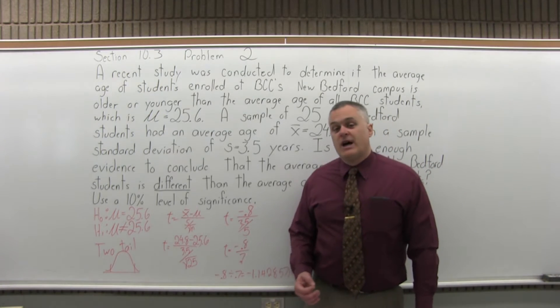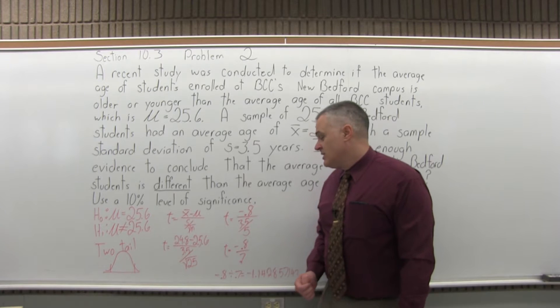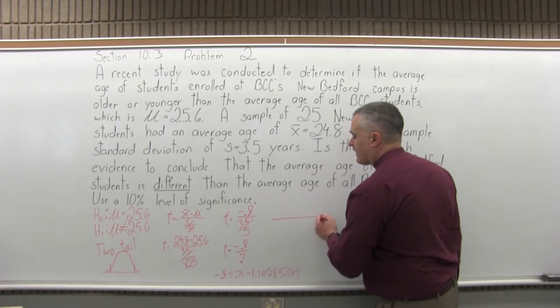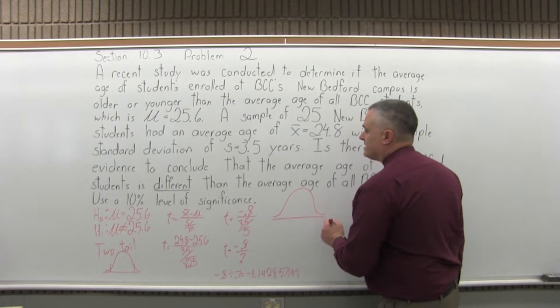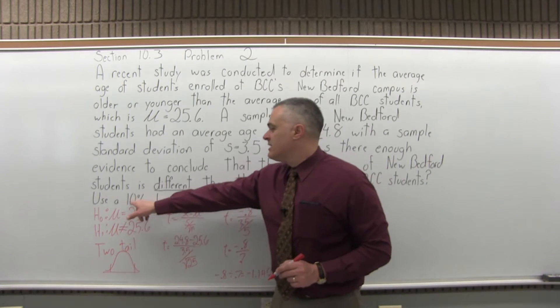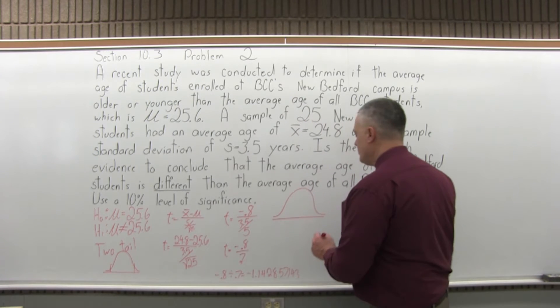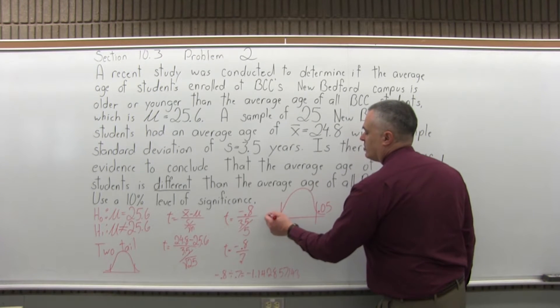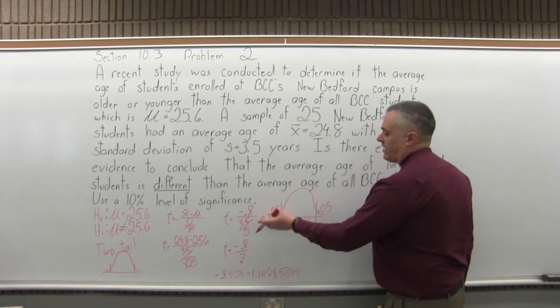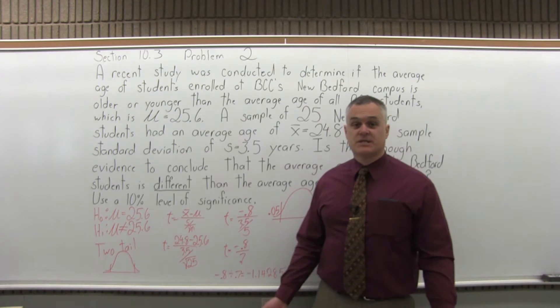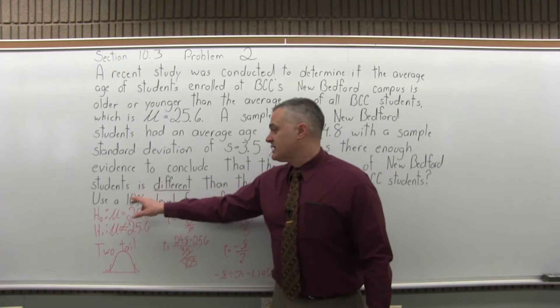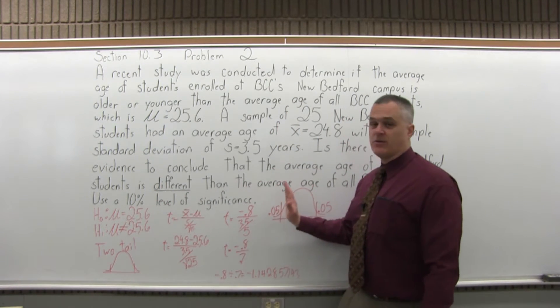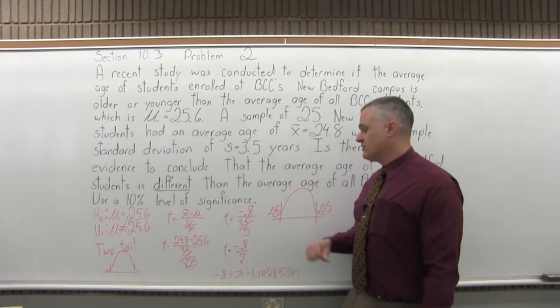Now the fifth step is to determine the critical value for t. So this is a two-tail test, and our level of significance, it says 10%. So for two-tail, for a total of 10% critical region, you're going to have half on the left end and half on the right end. So 5% for the left, 5% for the right. There's your total of 10% for a two-tail. If it's just the left or right, that full 10% would be either on the left or right side. But two-tail, you split it.